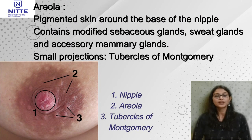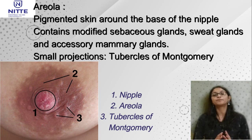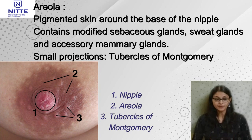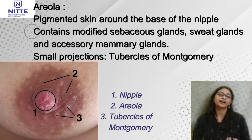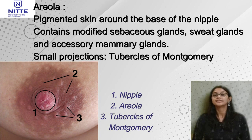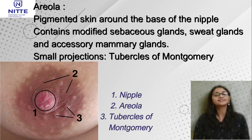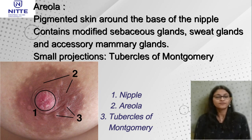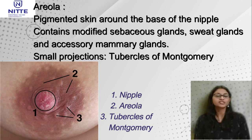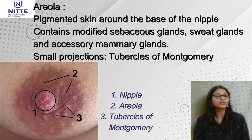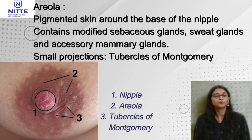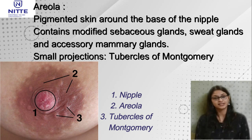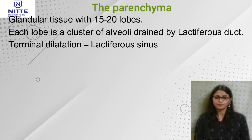The areola is a pigmented region of skin around the base of the nipple and contains modified sebaceous glands, sweat glands, and accessory mammary glands. Around the outer margin of the areola we can appreciate projections called tubercles of Montgomery, which become very prominent during pregnancy and after delivery.